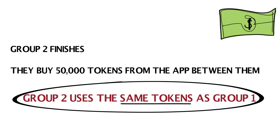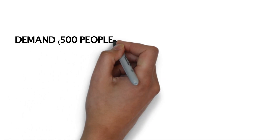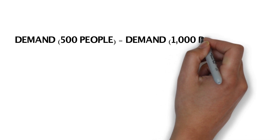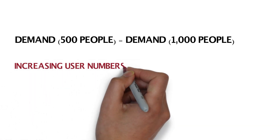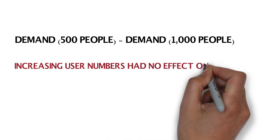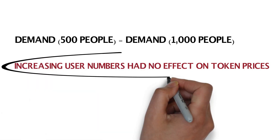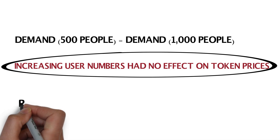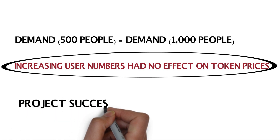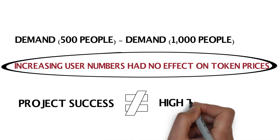Let that sink in for a second. The demand for tokens at any given time was the same when there were 500 people using the application as when there were 1,000 people. Constant demand equals constant token price. Therefore, increasing the number of users didn't increase the token price. This is why the concept of token velocity is so important. As I mentioned at the start, projects can be successful, they can get a lot of users on their application, and yet the token price may never increase.